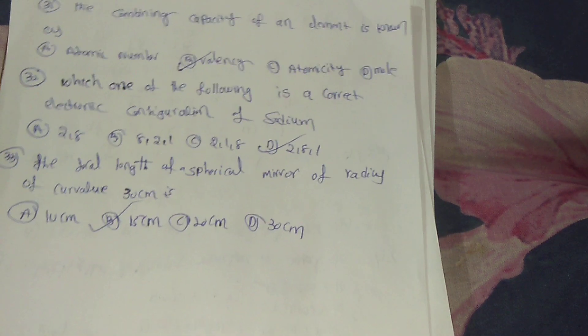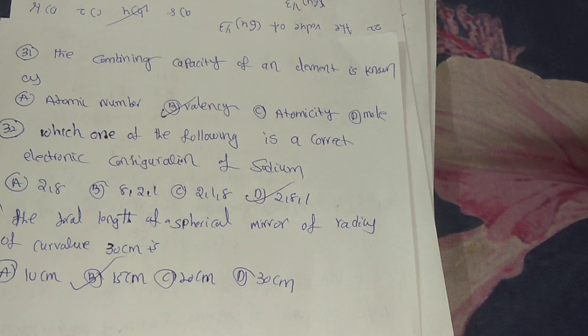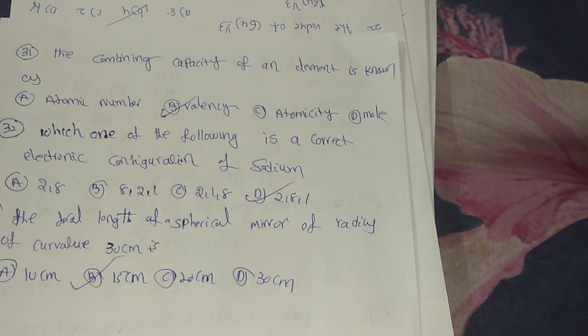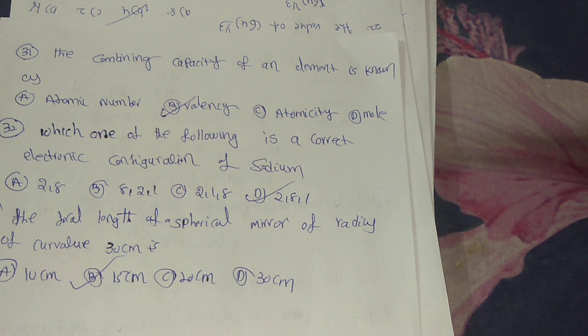Next, the combining capacity of an element is known as? Answer is option B, valency.